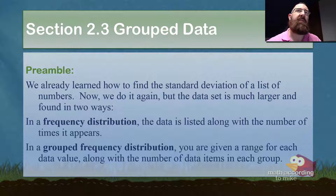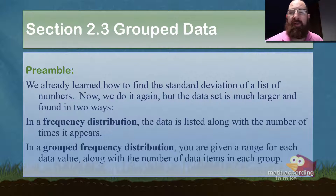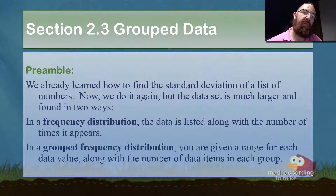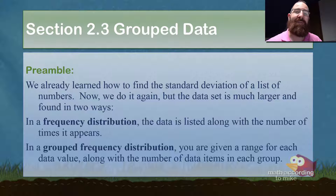For instance, it could say 1 to 100, and there are six things that are 1 to 100. So it has the group, and then it has the number of items in that group. The formal name for the groups are called classes.